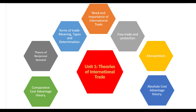Second is free trade and protection. Third is mercantilism. Fourth is absolute cost advantage theory. Fifth is comparative cost advantage theory. Next is the theory of reciprocal demand. Next is terms of trade — meaning, types, and determination.